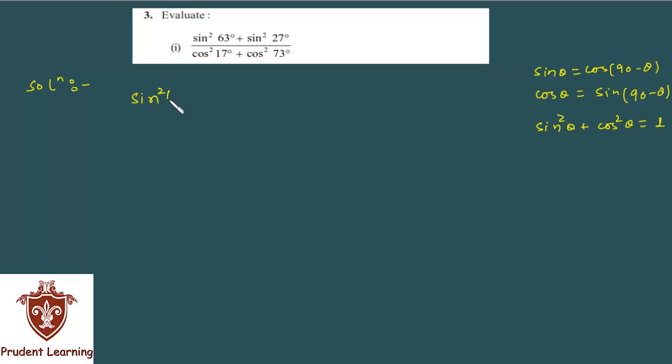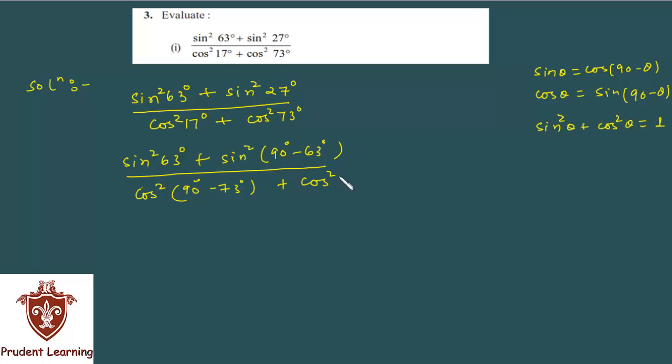First I'll copy the question as such: sin square 63 degree plus sin square 27 degree over cos square 17 degree plus cos square 73 degree. Now I'm keeping the first term as is. The second term in the numerator, 27 can be written as 90 minus 63. Likewise in the denominator, cos square 17 can be written as 90 minus 73, plus the third term as is. Whenever you have two terms whose angles sum to 90, here 63 plus 27 is 90 and in denominator 17 plus 73 is 90, if we change only one term and keep the other as such, then the answer comes.